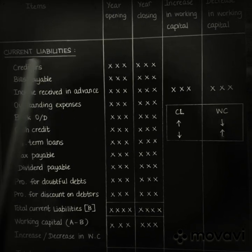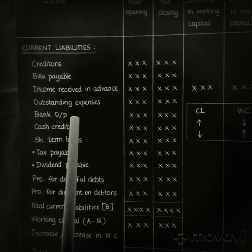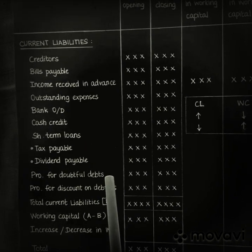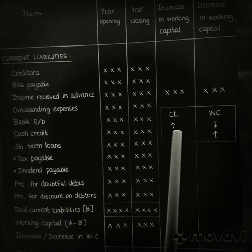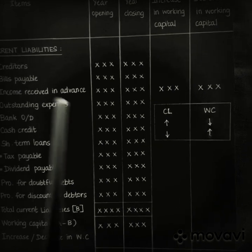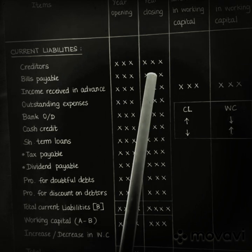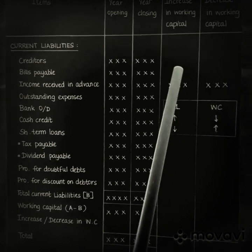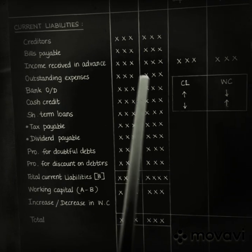Likewise, current liabilities are recorded: creditors, bills payable, incomes received in advance, outstanding expenses, bank overdraft, cash credit, short-term loans, tax payable, dividend payable, provision for doubtful debts, and provision for discount on debtors. The rule for current liabilities is the reverse: when current liabilities increase, working capital decreases — so post in the decrease column. When current liabilities decrease, working capital increases — post in the increase column. Total current liabilities are denoted as B.